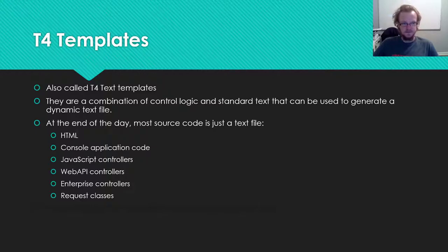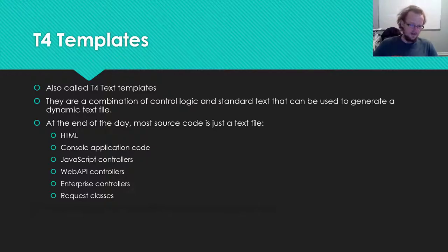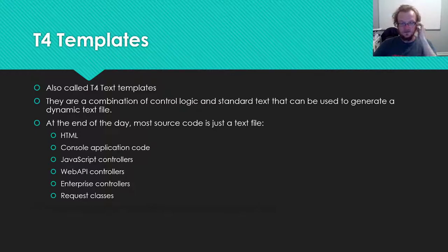You can think of basically any source code file as just a text file — HTML, C# for a console application, JavaScript controllers, web API controllers, enterprise controllers or ECs, request classes for POST requests, or even Java applications. At the end of the day, you can open all of those things in Notepad; they are just text with a different file extension.